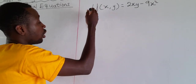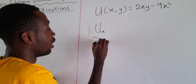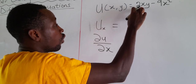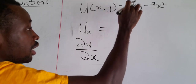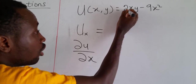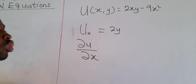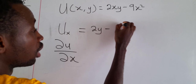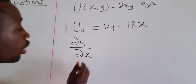Let's do partial differentiation with respect to x, written as ∂u/∂x. To differentiate a linear term in x, we take the coefficient of x. Here the coefficient of x is 2y, so the partial derivative of 2xy with respect to x is just 2y. For the term 9x², differentiating with respect to x gives 18x — we bring down the exponent and multiply by 9. That is the partial differentiation with respect to x.